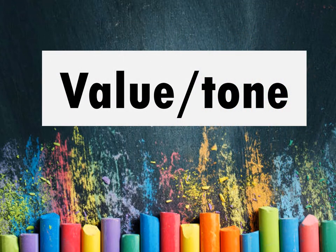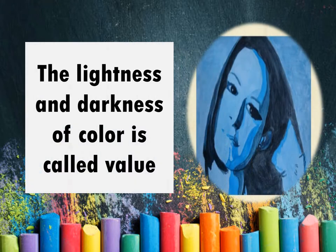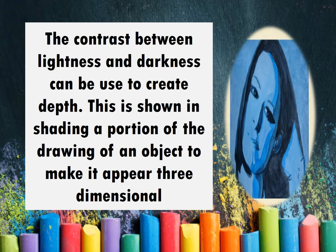Next, we have value and tone. The lightness and darkness of color is called a value. It is the intensity of colors that the artist puts in their artwork. The contrast between lightness and darkness can be used to create depth. This is shown in shading a portion of the drawing of an object to make it appear three-dimensional.